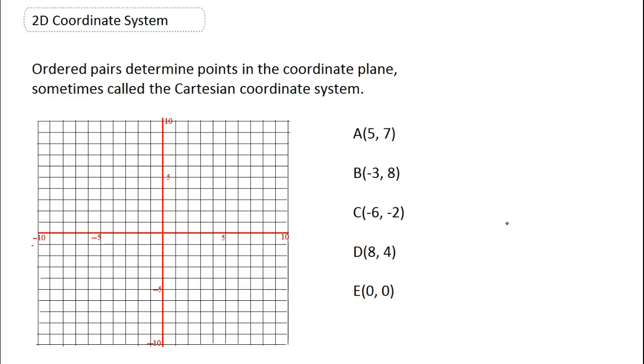All right, everybody ready to learn the basics of graphing in a 2D coordinate system? So we can first talk about ordered pairs, and they determine points in the coordinate plane. The coordinate plane is just the plane with an x and y axis. So horizontal axis is x, vertical axis is y, and your first coordinate is always going in the horizontal direction, and your second coordinate is always going in the vertical direction.